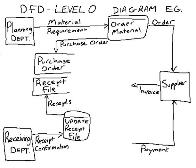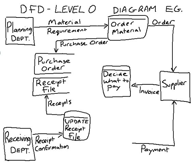Once we send the order to the supplier, they'll be sending us the goods, and with any goods you purchase they also send an invoice. Once we receive the invoice we will check it. The main thing the supplier wants is to make sure they get paid for goods and services delivered, so we need to decide what to pay them — and we can do that by retrieving the order details to check against the invoice and receipt details as well.